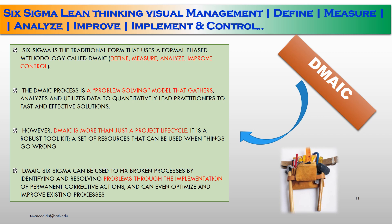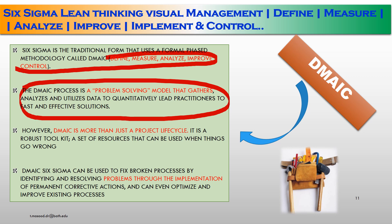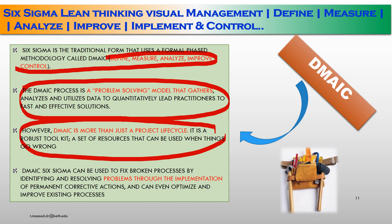Six Sigma's traditional form uses a formal phase methodology called DMAIC — define, measure, analyze, improve and control. The DMAIC process is a problem solving model that gathers, analyzes and utilizes data to quantitatively lead a practitioner to fast and effective solutions. DMAIC is more than just a project life cycle — it is a robust toolkit that can be used when things go wrong. DMAIC can fix a broken process by identifying and resolving problems through permanent corrective action and can optimize and improve existing processes.